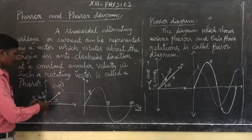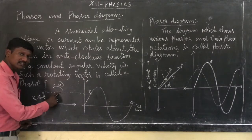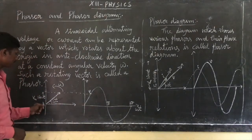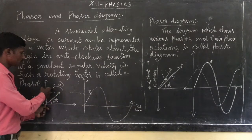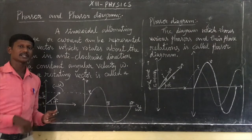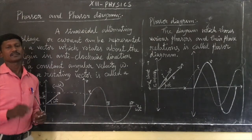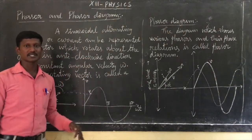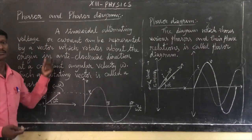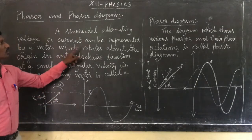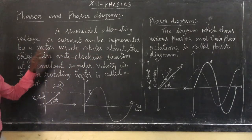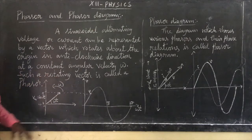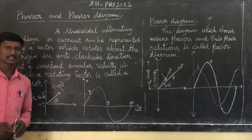This is a phase. In this phase, the first phase is a point of rotation — that is RG. RG is the pivot point of rotation. The other pivot point of rotation will rotate. Anticlockwise is R, and omega is a constant and also rotates. A voltage or current can be represented as a vector which rotates about the axis — that is RG — about the point of rotation in anticlockwise direction at constant angular velocity omega. Such a vector is known as a phasor.